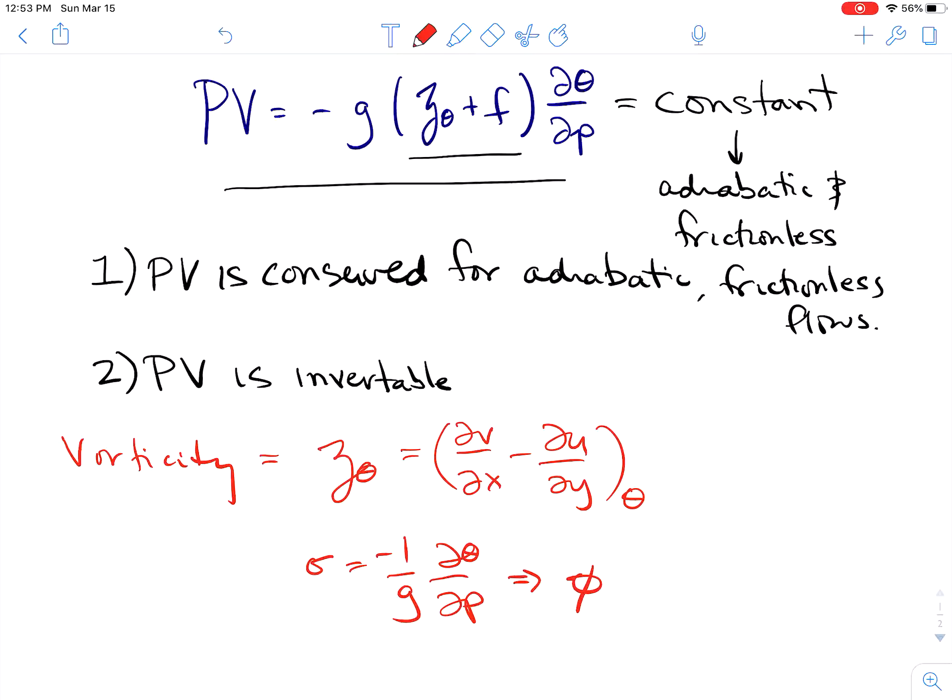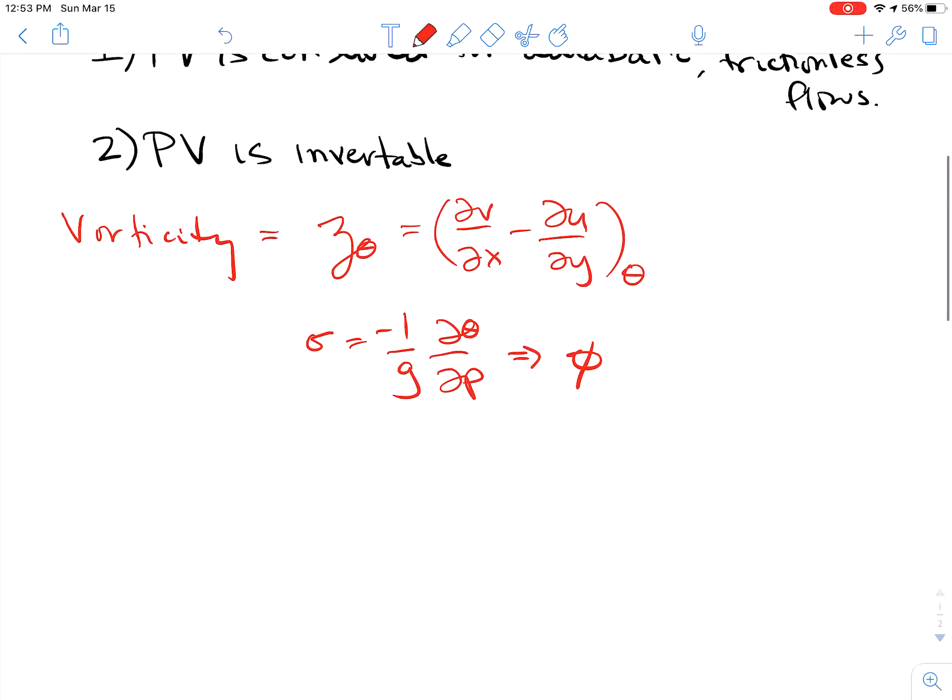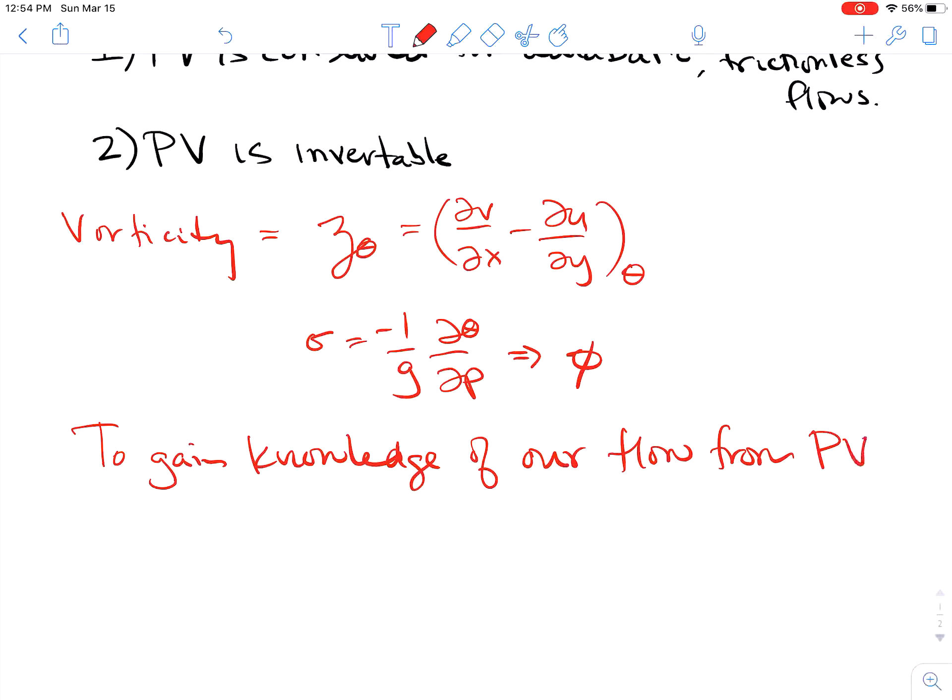But in order to actually retrieve these pieces of information, like the u and v components of the wind and the geopotential height, we would need appropriate boundary conditions to do so. And so there are three things that we need in order to invert PV and get out these base state variables.